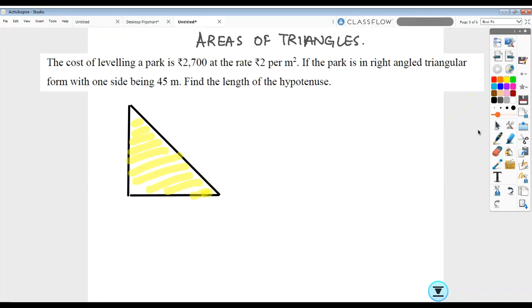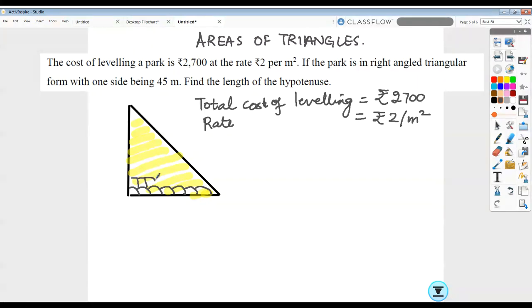Now whenever the cost of leveling the entire park is given, the total cost is given to us. That means we have to first work out the area of this park because leveling happens on the entire area. If the rate is given, that means the per unit cost is given. The rate was ₹2 per meter square, so for every meter square ₹2 was charged.